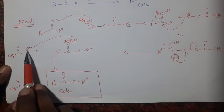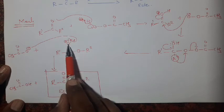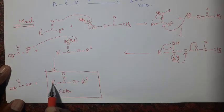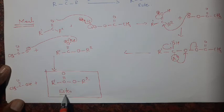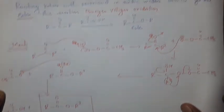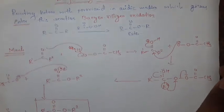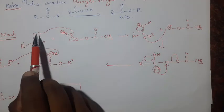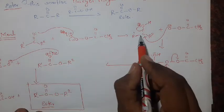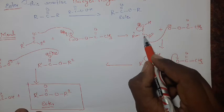In the last step, this negatively charged oxygen abstracts the proton. At that time, these bonding electrons are shifted to this oxygen, then it becomes R–C=O–O–R2. The mechanism of Baeyer-Villiger oxidation: the ketone reacts with the peroxy acid, the carbonyl oxygen abstracts the proton to form a positively charged oxygen, and the negatively charged oxygen of the peroxy acid attacks the carbonyl carbon.